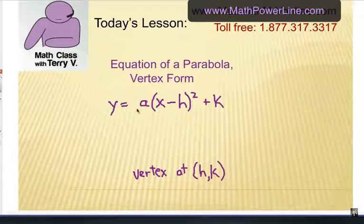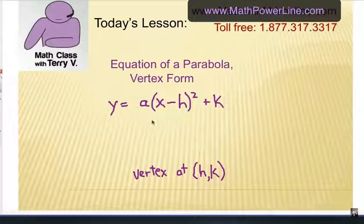Now, let's start with the equation of a parabola. This is the vertex form. y equals a—a is a multiplier out in front. Sometimes it's a 1 and doesn't exist. Sometimes it's some other number.